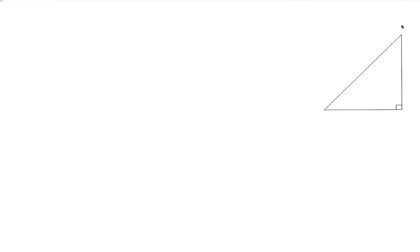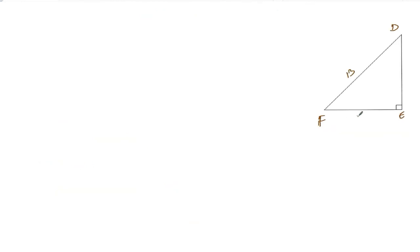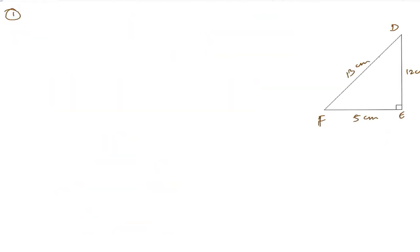So our triangle DEF has sides: DF = 13, FE = 5, and DE = 12 centimeters. Now for part (i): find tan D minus cot F.